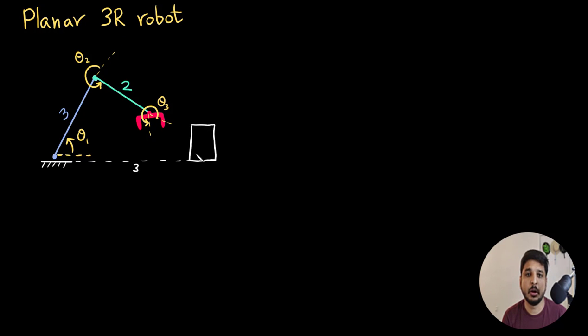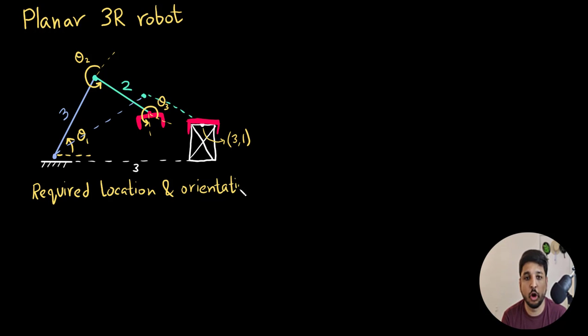Now let me draw the object here. So the object is 3 units to the right and it has a height of 1 unit. So now the question is, what is the required location and orientation of the end effector here? So that it can pick the object. I know just by looking that the x coordinate must be 3, the y coordinate must be 1 and the phi which is the orientation must be minus 90 degrees.